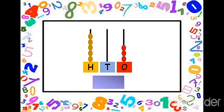Now it's your turn to solve it. Look here. Can you see the abacus? Look at the ones spike. How many beads do you see? Let's count: one, two, three. Yes, there are three beads. So we will write three. Now tell me how many beads are here in the tens place? No beads. So when there are no beads, we will write zero.